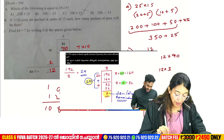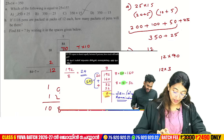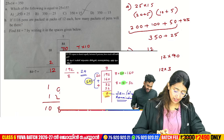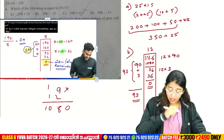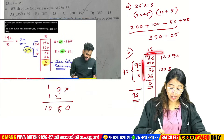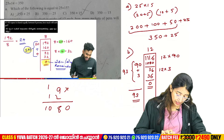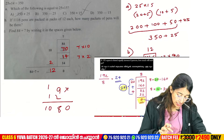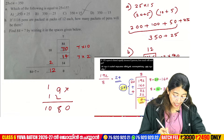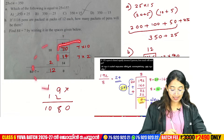1116 pens are packed in packets of 12. Find 84 divided by 7 by writing in the space given below. This is a rectangle method. If you have to do this, do this answer correctly. We have a new activity here.